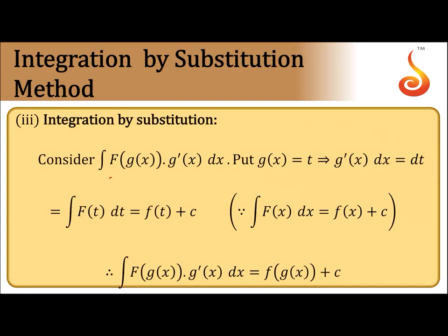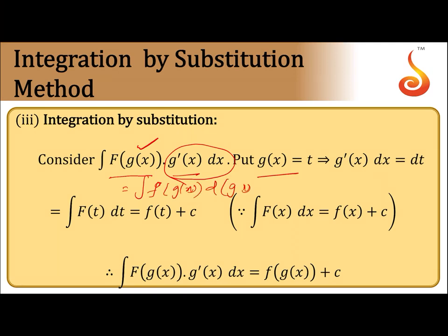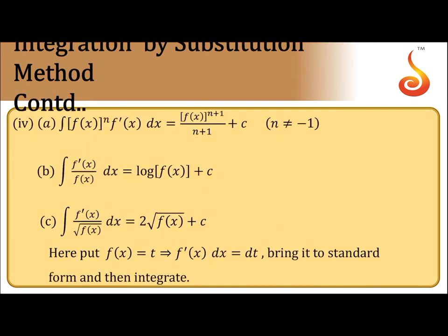Integration by substitution: if you have integral f(g(x))·g'(x), make the substitution g(x) = t so that g'(x)dx = dt. That can also be written as integral of f(g(x)) multiplied by the differential of g(x), giving f(g(x)) plus constant.